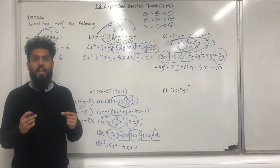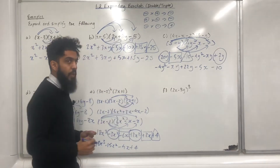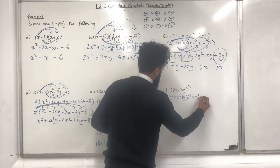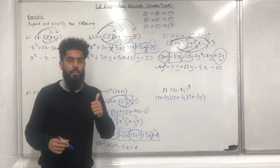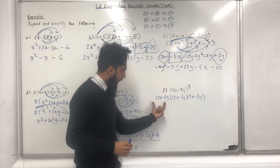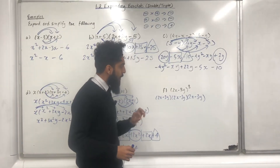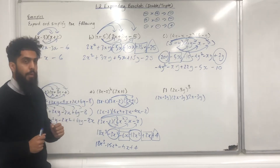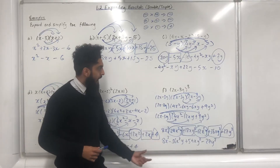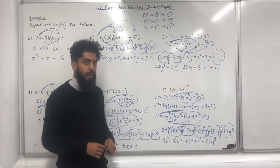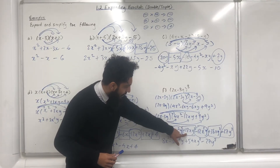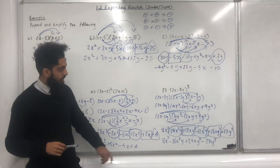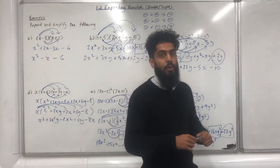Part F: we have a bracket cubed, meaning (2x − 3y) written three times. You have two options: expand the first two brackets then multiply by the third, or expand the last two brackets then multiply by the first. The final answer is shown on the board. A quick note: some students might write 18xy squared as 18y squared x — that is equivalent and correct, but in general you should keep your letters in alphabetical order, so x comes before y squared. If you found this video useful, please don't forget to subscribe.